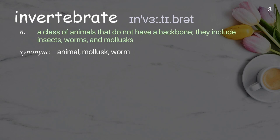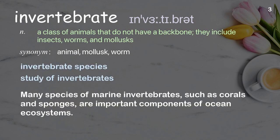Invertebrate. A class of animals that do not have a backbone. They include insects, worms, and mollusks. Examples: invertebrate species, study of invertebrates. Many species of marine invertebrates, such as corals and sponges, are important components of ocean ecosystems.